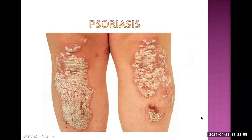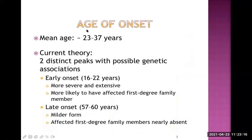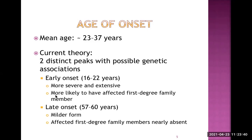Regarding the epidemiology of psoriasis: it is a common skin disorder, equally common in both males and females, with an estimated incidence of 60 per 100,000 people per year. Regarding age of onset, the mean age is 23 to 37 years, but there are two distinct peaks. Early onset occurs at 16 to 22 years, and late onset occurs at 57 to 60 years. Early onset is more commonly associated with having a first-degree family member with psoriasis — it runs in the family — whereas late onset doesn't have that association.